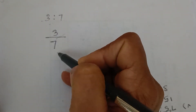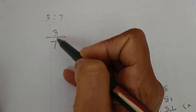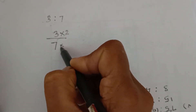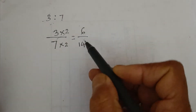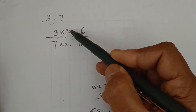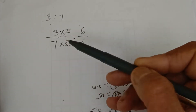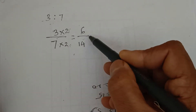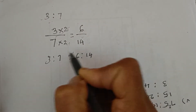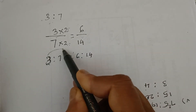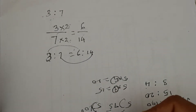Ratio can be written in the form of a fraction. The first term is the numerator and the second term is the denominator. To find equivalent ratios, multiply both numerator and denominator by the same number. For example, 3 twos are 6 and 7 twos are 14. You can also multiply both 3 and 7 by 3, 4, 5, or any number. The condition is: multiply both numerator and denominator by the same number so that we get equivalent ratios. So, 3 is to 7 is equal to 6 is to 14. This is the concept we are going to use in Exercise 3.2.